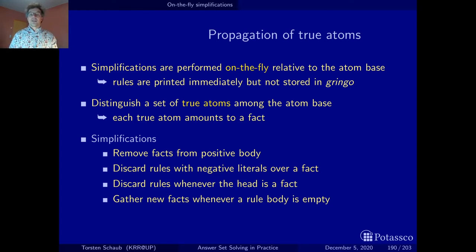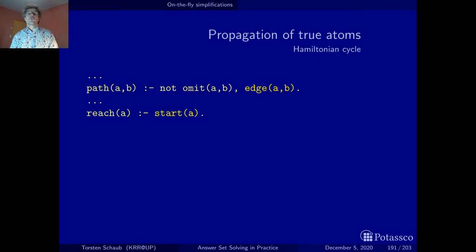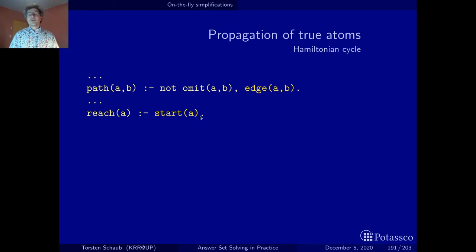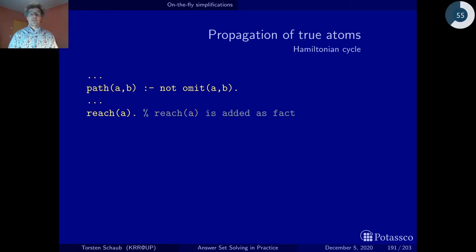Let's look at a few ground rules in our Hamilton cycle example and see how they can be simplified by the true atoms in the atom base. We have two rules where the positive body literals — namely edge(A,B) and start(A) — are true because they appear as facts in the problem instance. Hence, we can remove them since their condition has already been established, simplifying the ground rules. By doing this, we have established that A is reachable as a fact.